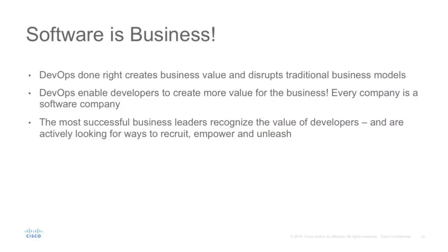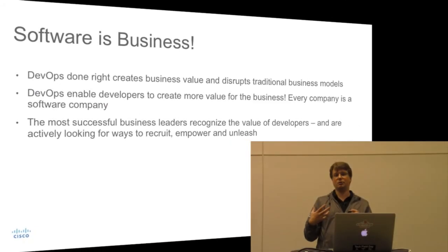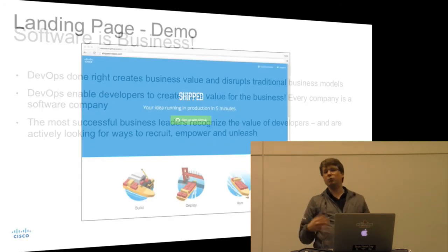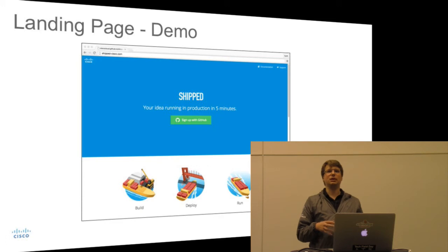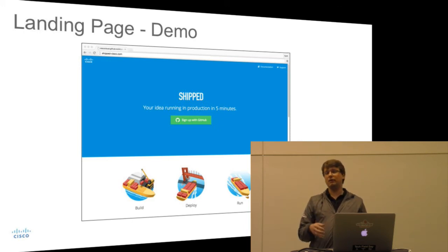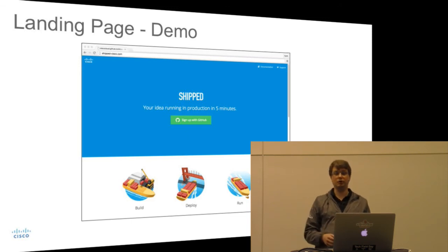Software is business — businesses are evolving into a software business. Everyone has software and needs to enable their customers with software. Today we have built basically a proof of concept that we're turning into GA called Shipt. Shipt is a tool that simplifies the DevOps model and allows us to deliver cloud-native applications in an easy, seamless way to increase velocity and improve agility of our business needs.